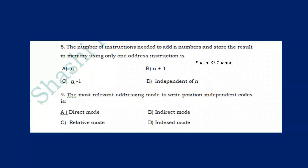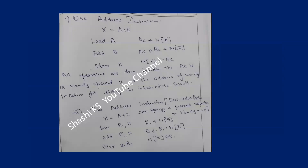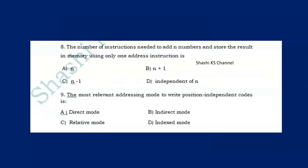Question: the number of instructions needed to add N numbers and store the result in memory using one-address instructions. For example, to add two numbers A and B stored in memory: load A (stores A in accumulator), add B (adds B to accumulator), store X (stores result). That is 3 instructions for 2 numbers. So to add N numbers you need N+1 one-address instructions. The answer is option D.